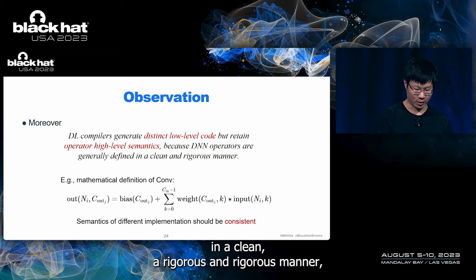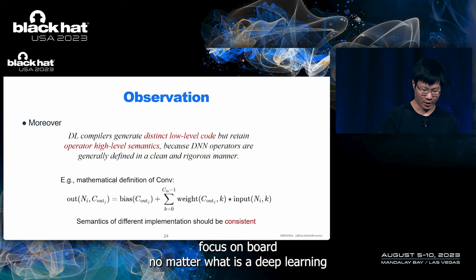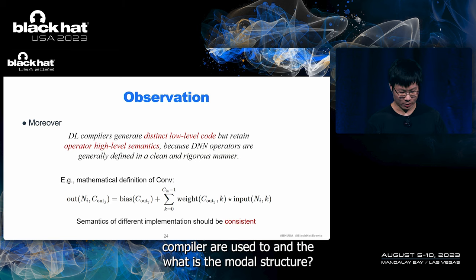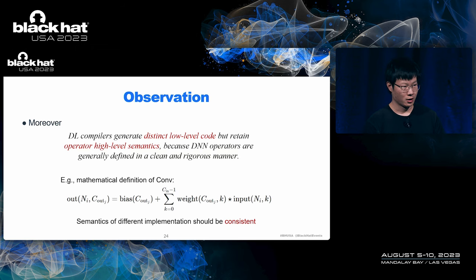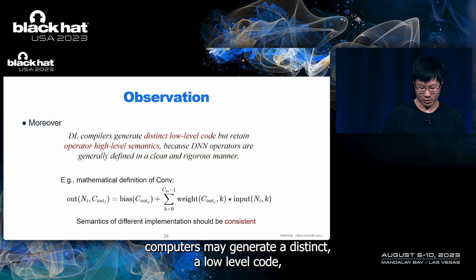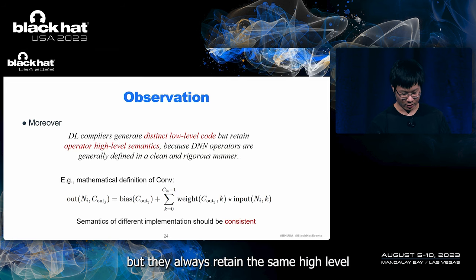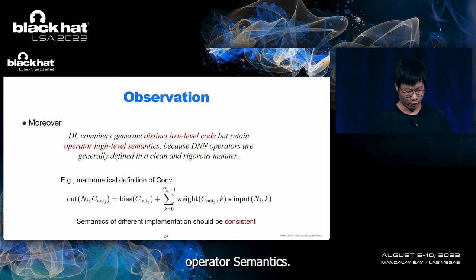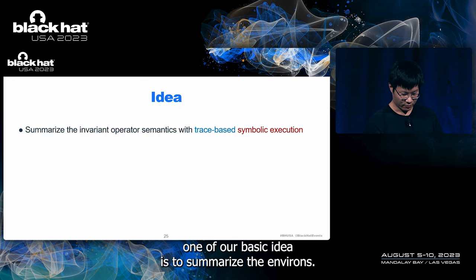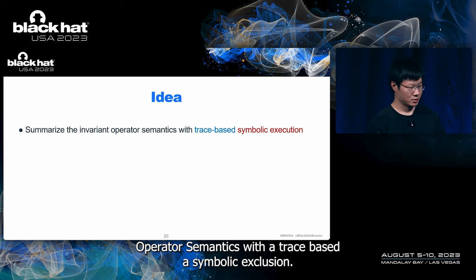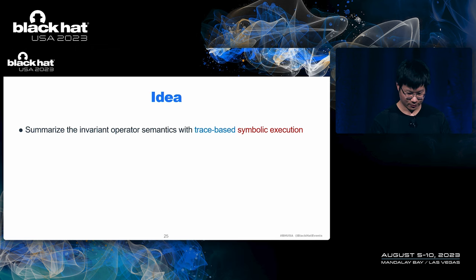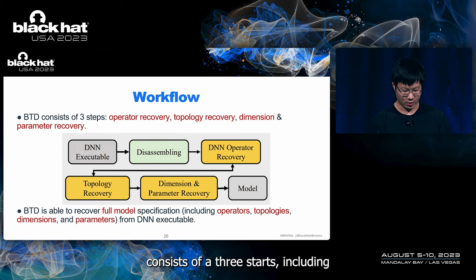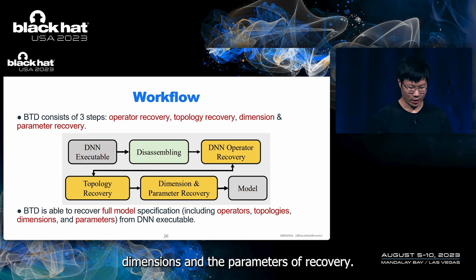Moreover, DN operators are generally defined in a clean and rigorous manner. No matter what deep learning compiler is used and what the model structure is, the semantics of the convolution operator should always be the same. Deep learning compilers may generate distinct low-level code, but they always retain the same high-level operator semantics. Therefore, one of our basic ideas is to summarize the invariant operator semantics with trace-based symbolic execution. BTD consists of three steps: operator recovery, topology recovery with dimensions, and parameter recovery.